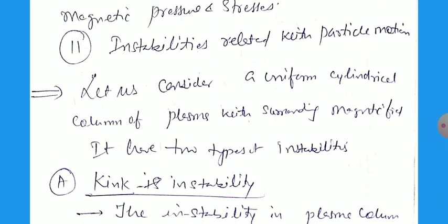Let us consider a uniform cylindrical column of plasma with surrounding magnetic field. Around that one there is the magnetic field and the plasma is in cylindrical form. Now there are two types of instabilities. Number one is the kink instabilities.